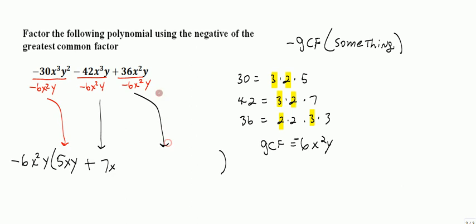The last term, positive 36 divided by a negative 6 is negative 6. The x squares cancel and the y's cancel. So that means this is the answer right here.